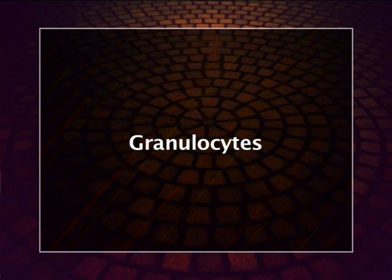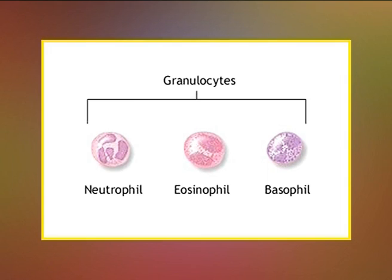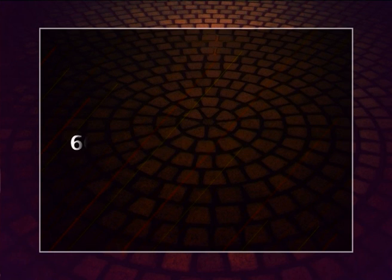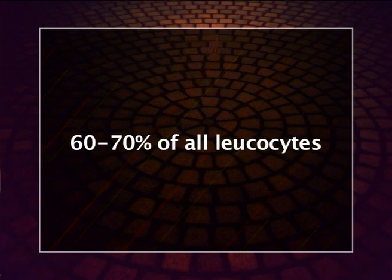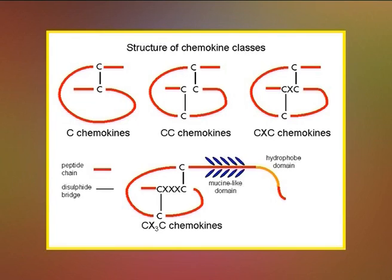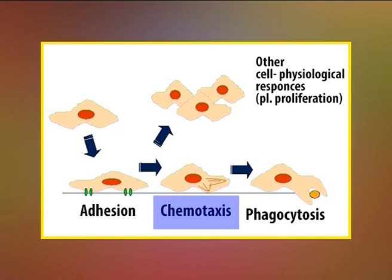Granulocytes have irregularly shaped nuclei with 2–5 lobes and are often called polymorphonuclear leukocytes. Their cytoplasmic matrix has granules containing reactive substances that kill microorganisms and enhance inflammation. Neutrophils form 60–70% of all leukocytes. Tissue damage by invading microbes releases chemicals called chemokines which attract neutrophils from the blood; movement of neutrophils toward the source of a chemical attractant is termed chemotaxis.